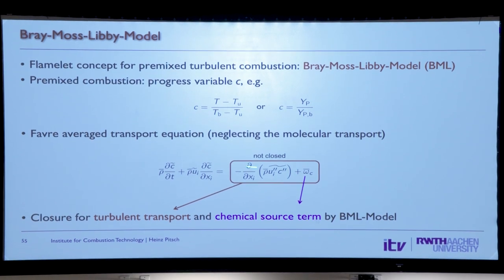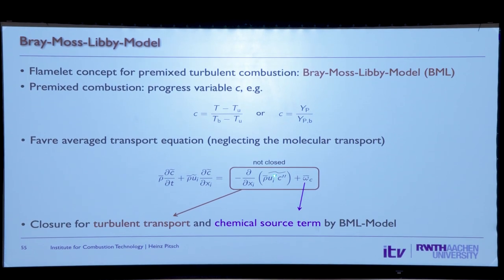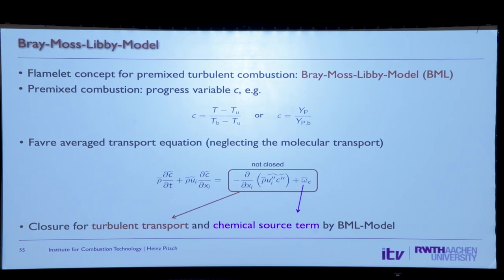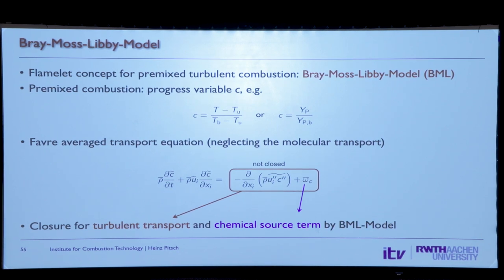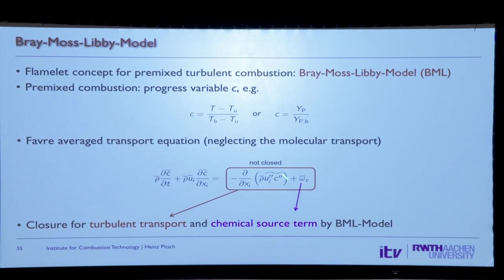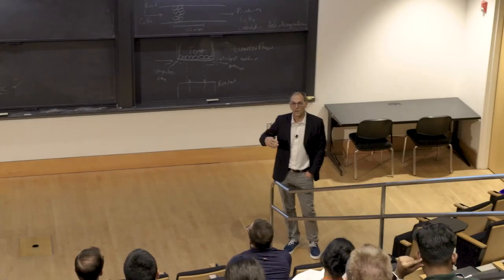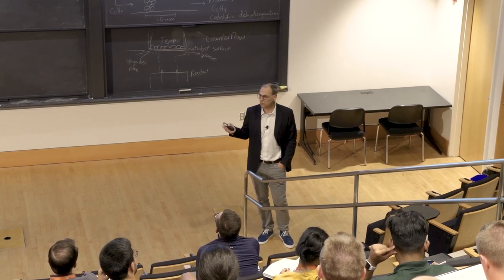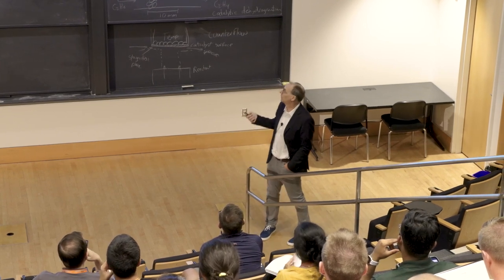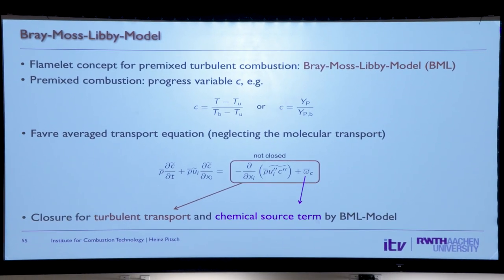After Favre averaging I get two unclosed terms: one is the turbulent scalar flux — the turbulent transport term — and the other is the chemical source term. The first thing we usually do is apply a gradient transport assumption for the scalar flux. What we will show is that by introducing this modeling assumption we can rigorously show that assumption is wrong, and we will come up with a different model for this term.